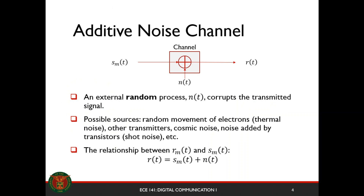The simplest channel is the additive noise channel. An external random process N of T corrupts our transmitted signal and it becomes R of T. So basically, we just add these two signals. The possible sources of that would be random movement of electrons or thermal noise, some other transmitters that are transmitting and add to the signal, noise added by transistors, and so on.